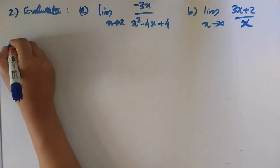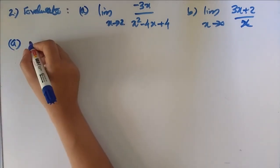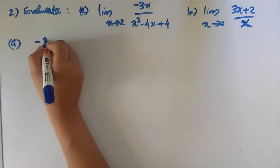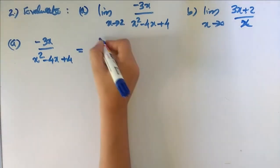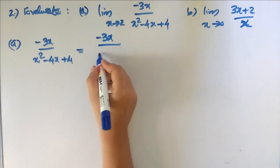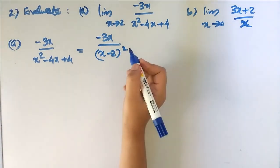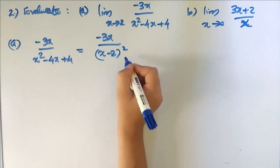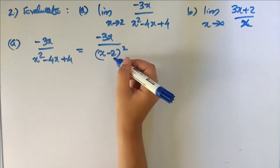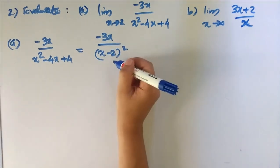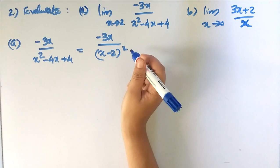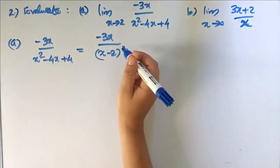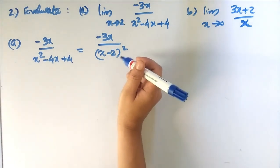Now we try the first function. The given function can be written as minus 3x divided by x squared minus 4x plus 4. The denominator factors as (x minus 2) all squared. The denominator vanishes when x equals 2, so we cannot use the quotient rule directly.